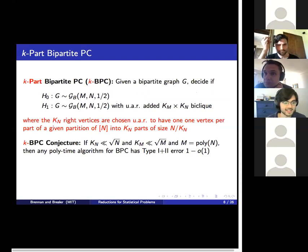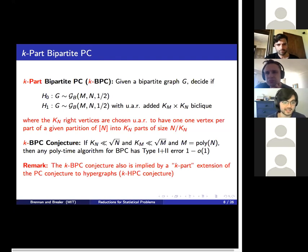We now make one further modification by imposing a partition over the right side of the bipartite graph. This is the key technical modification that will make our reduction techniques pass through. Specifically, we choose the K_n right vertices randomly such that there's exactly one per part of a given partition of n into K_s of n equally sized parts. This hardness assumption is also implied by a k-part extension of Planted Clique to hypergraphs. Furthermore, all these extensions are supported by failure of low degree polynomial tests and statistical query algorithms. Because reduction techniques are our focus, I won't get further into the details of how hard the starting assumptions are, but the important takeaway is that this KBPC conjecture is our starting point.